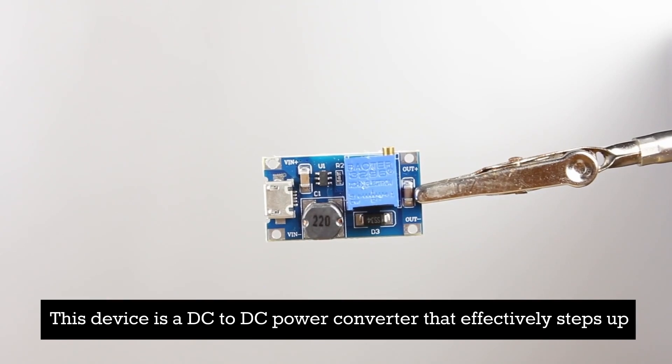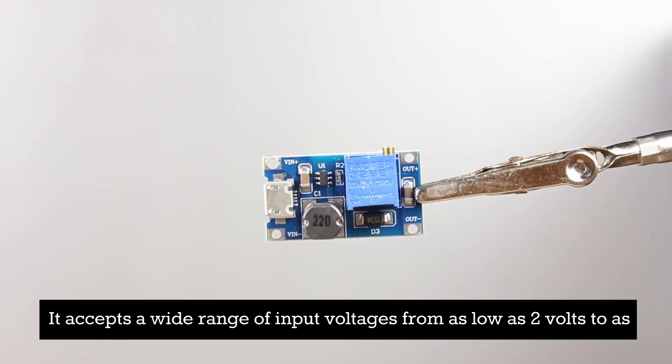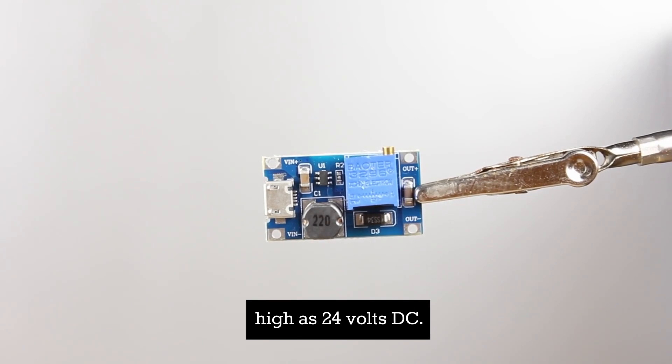This device is a DC to DC power converter that effectively steps up the voltage from its input to its output. It accepts a wide range of input voltages from as low as 2 volts to as high as 24 volts DC.